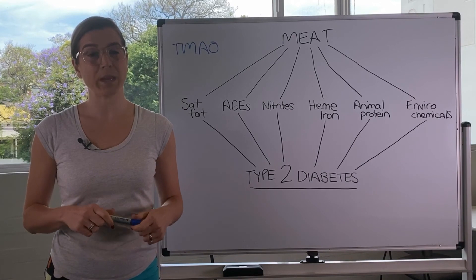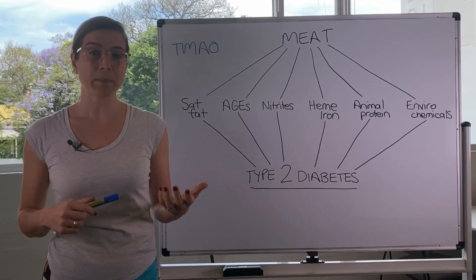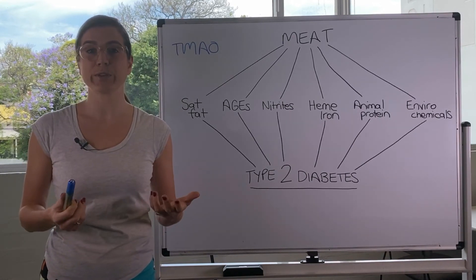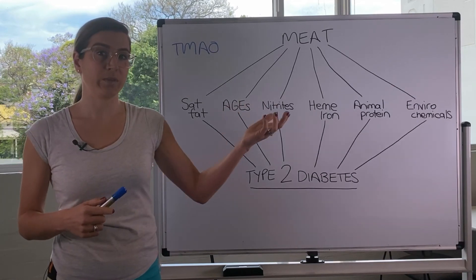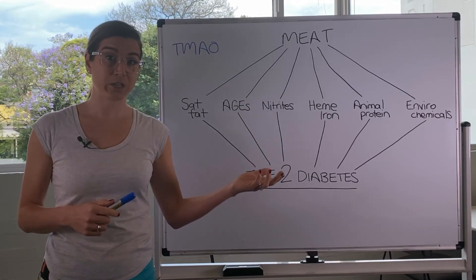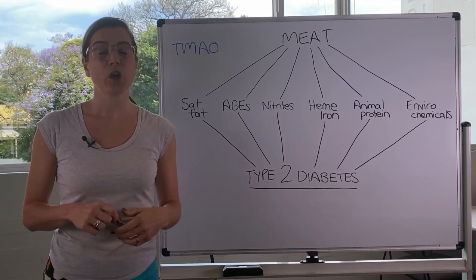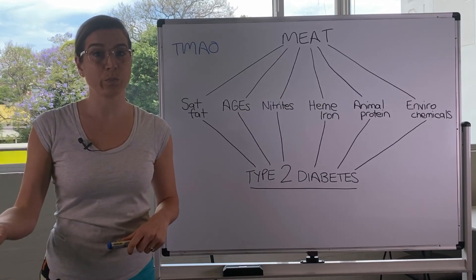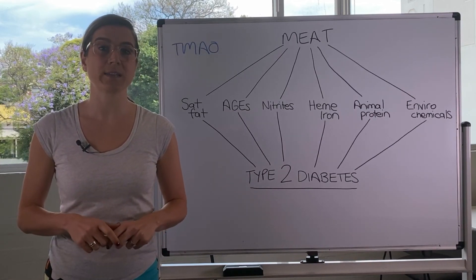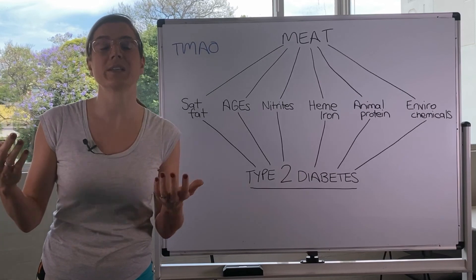Whereas if you swap meat with other plant-based sources and whole foods, then you're not just removing the meat, which may be potentially contributing to insulin resistance, you're also adding in all these really health-promoting nutrients that will help to improve insulin sensitivity.